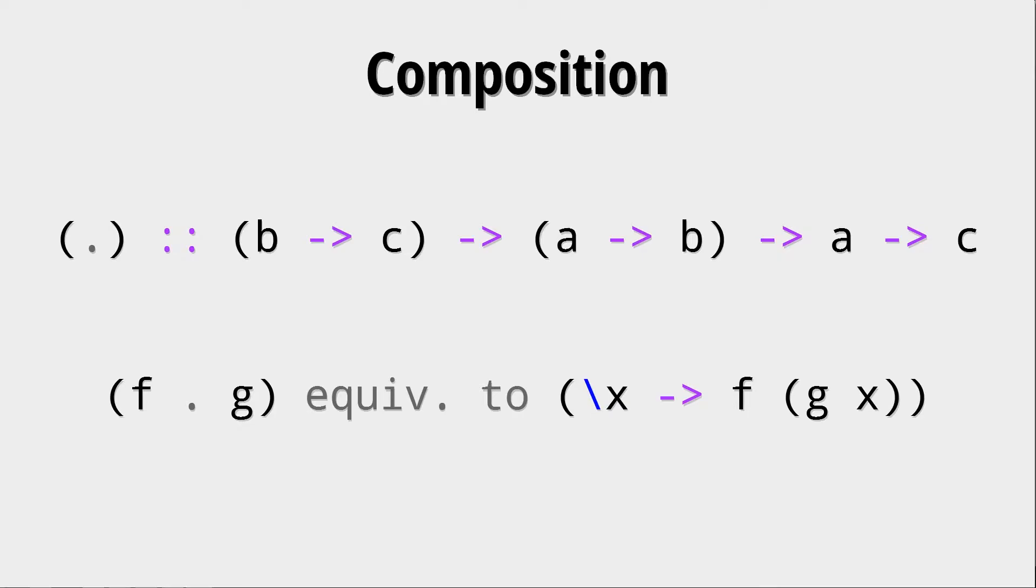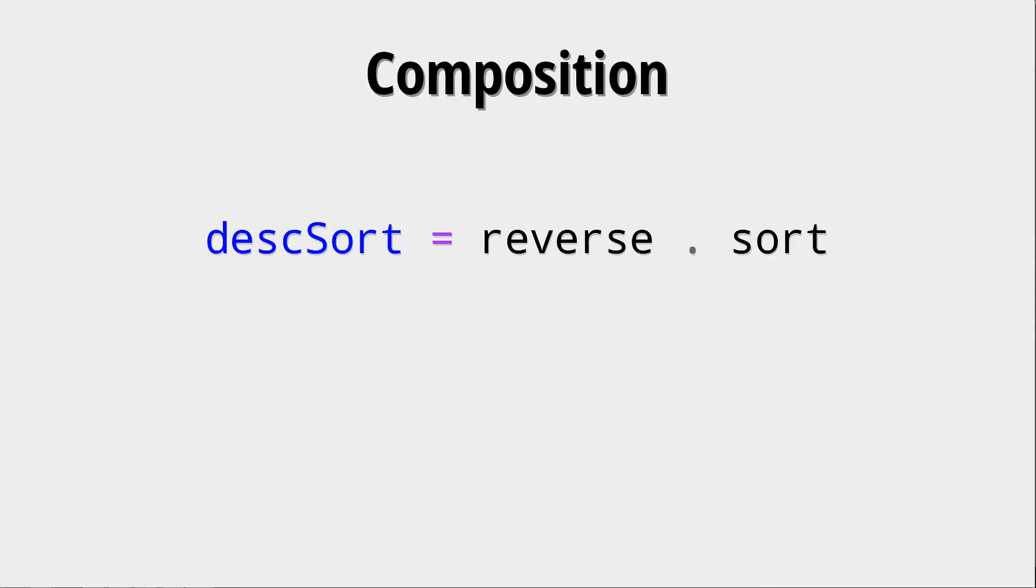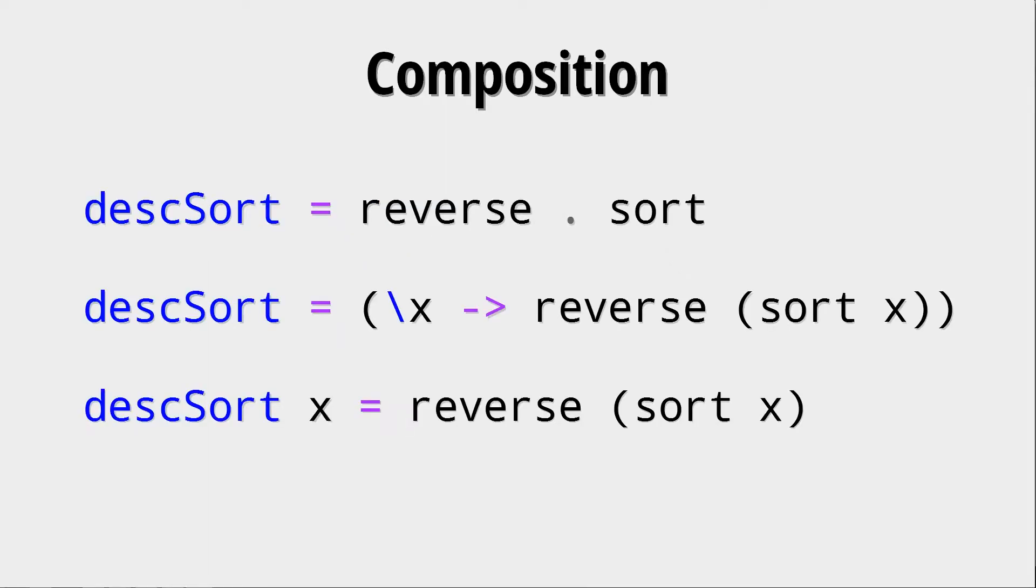So what can this be used for? For example, let's say you have an ascending sorting function like sort and you have a reversing function like reverse. You could construct a descending sorting function by doing this little composition. Now, why is this true? Those three definitions we have here are completely equivalent and we can see step by step how you get to the last result.